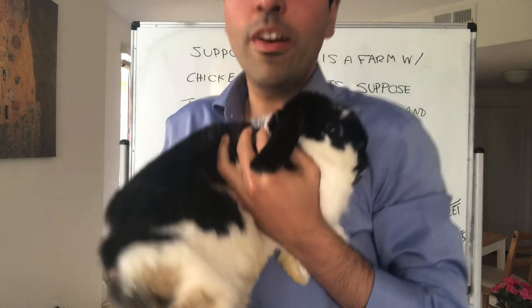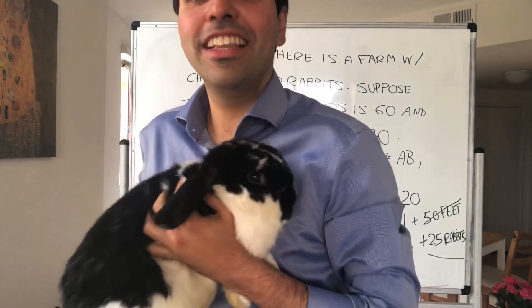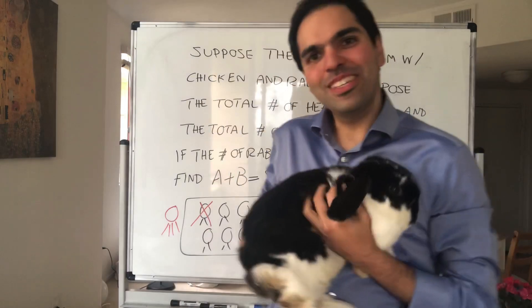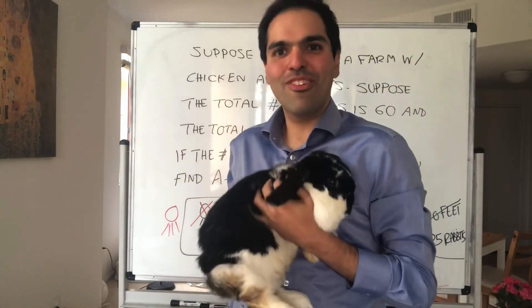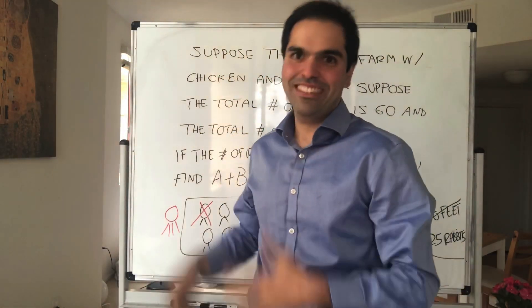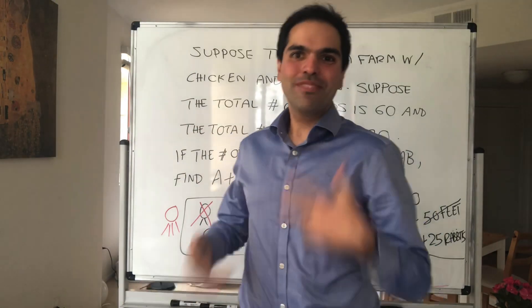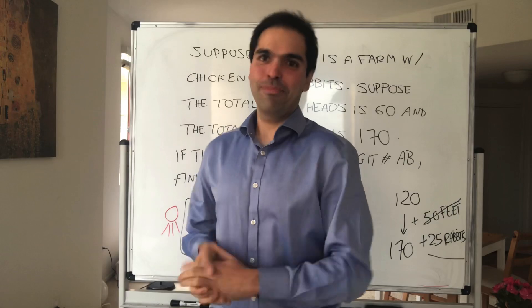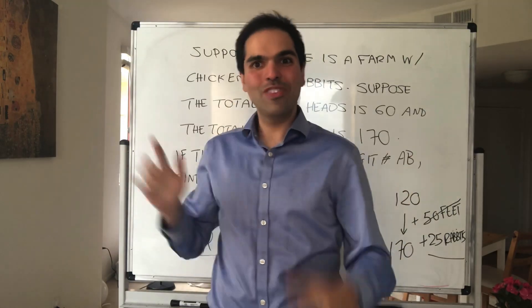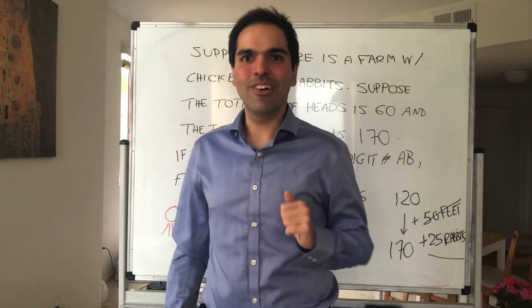This is my bunny, Oreo. She has 2 feet and 2 hands — I don't understand why you say bunnies have 4 legs, it doesn't make any sense. However, if you assume bunnies have 2 legs and chickens have 2 legs, then this problem is impossible. That's why I had so much trouble doing this problem. I even gave a YouTube survey and only 30% of people agreed with me.